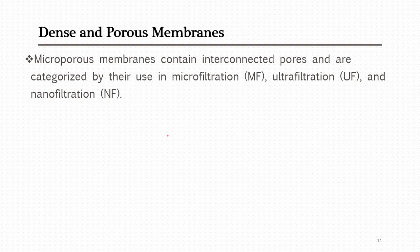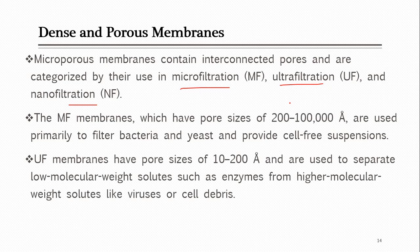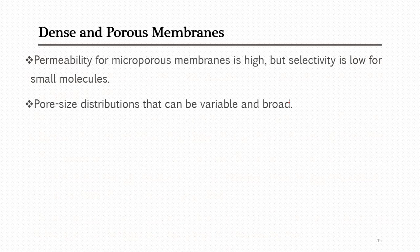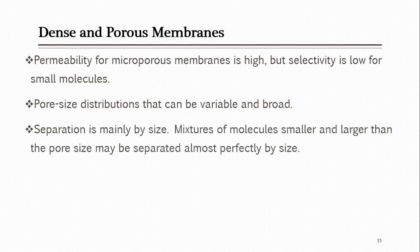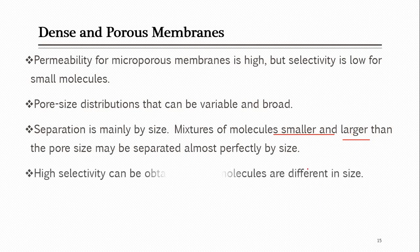Porous membranes are also named micro-porous membranes, categorized into three types: ultrafiltration, microfiltration, and nanofiltration. The difference between these three is based on pore size, and because they have different pore sizes, separation takes place based on size. They are good for separating smaller and larger molecules. High selectivity can be achieved when molecules differ in size — membrane selectivity means the membrane allows one component to pass through while stopping another.